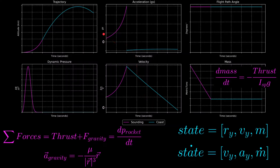Starting at the top left, we see that the altitude is increasing non-linearly with respect to time during the thrust phase. This makes sense because this simulation uses a constant thrust, and mass is linearly decreasing while the rocket is thrusting, which is shown in the bottom right plot. So with the same force and less mass, we expect more acceleration as time goes on, which we can see in the acceleration plot in the middle.